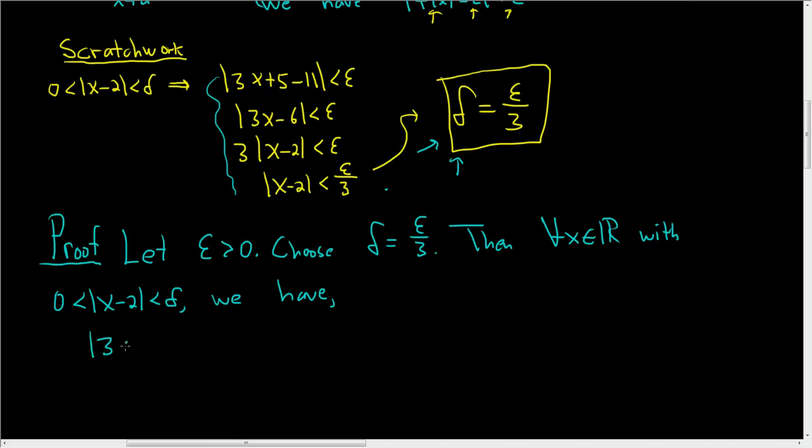So we have f of x, which was 3x plus 5, minus l, which is 11. And this is equal to 3x minus 6. Notice we didn't write less than epsilon. We're not allowed to do that. That's what we have to prove. That's why it's good to separate the scratch work from the proof.